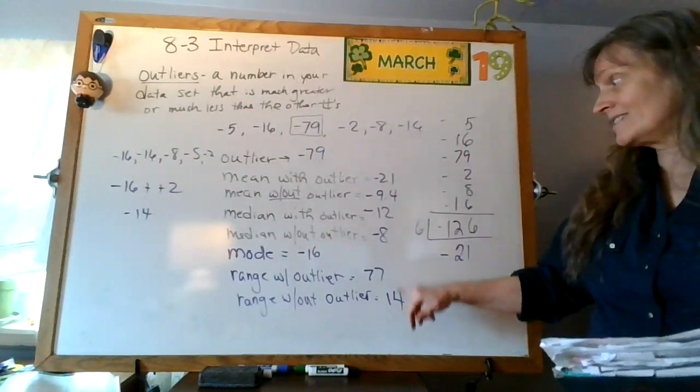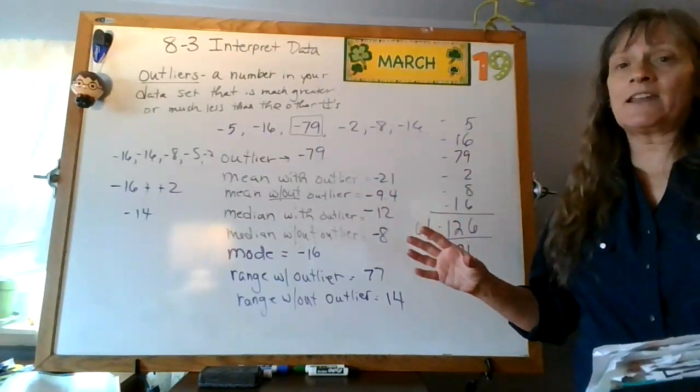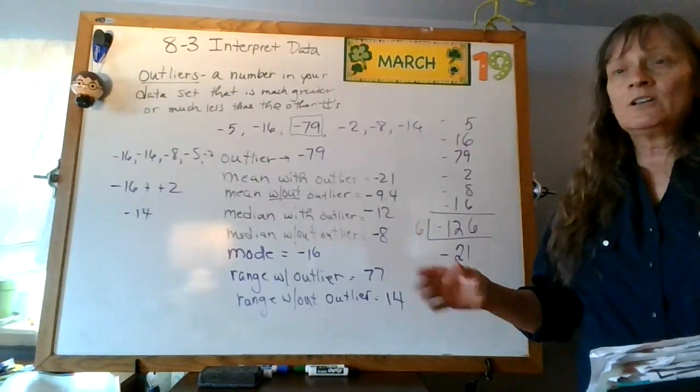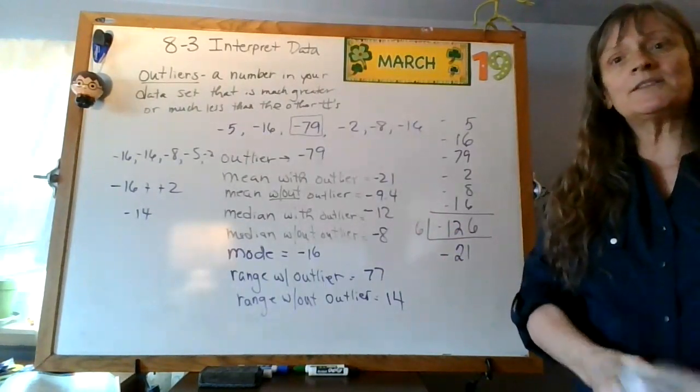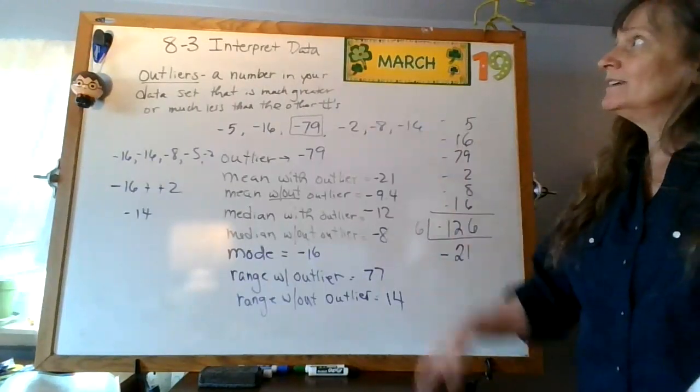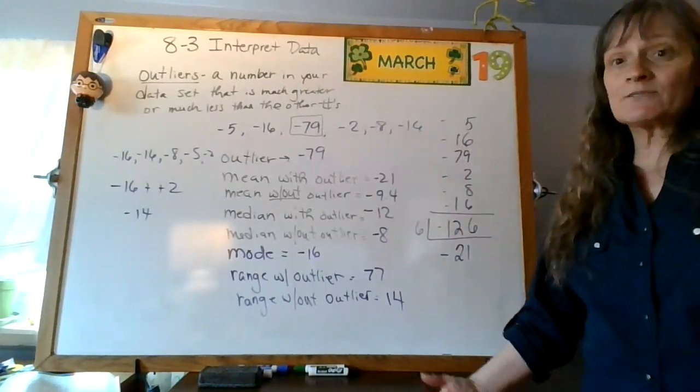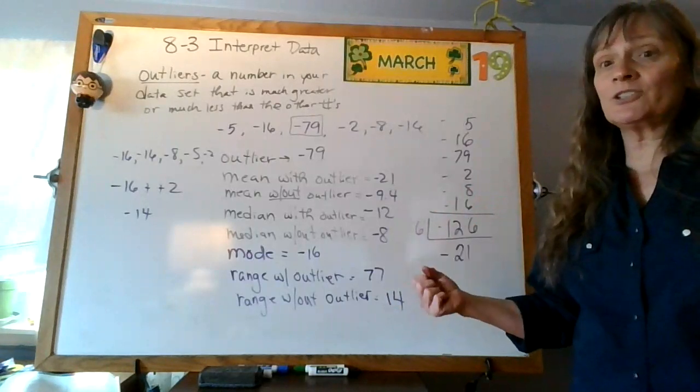You often are going to get rid of that outlier because it's going to, you can see, it gives you very different data if you have outliers. So just keep that in mind. This is all super real life stuff when we're doing this kind of data. And this really helps us make good decisions.